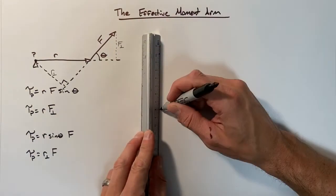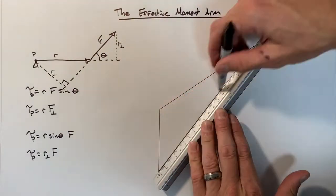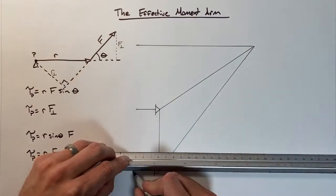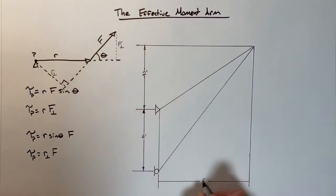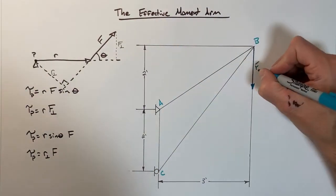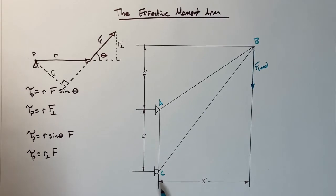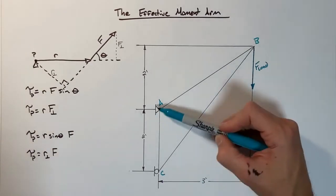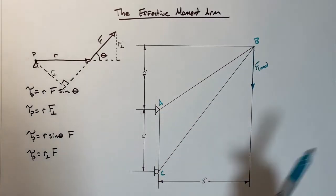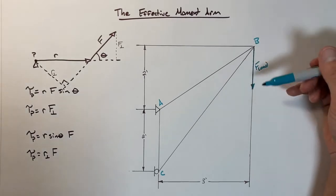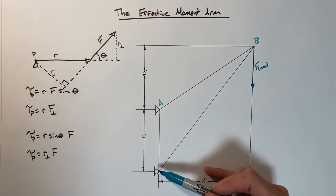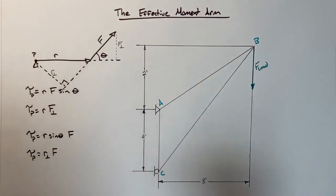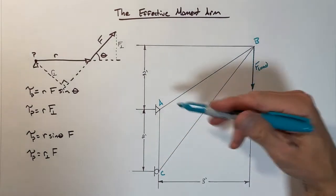This can save us quite a bit of time depending on what we're given in a problem, looking at our component of r perpendicular to F. I'll show you an example here and how this can save us some time. Let's look at this truss right here. This truss is formed by members AB, BC, and AC. It's just a triangle and there's a load out here.